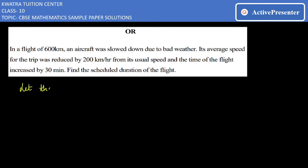Let the usual speed be x km per hour. The reduced speed will be x minus 200 km per hour. Now the next part is the distance. Distance they have given as 600 km.